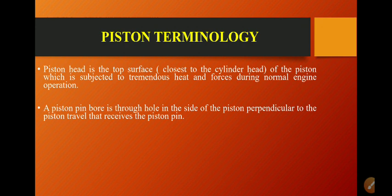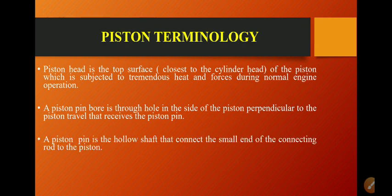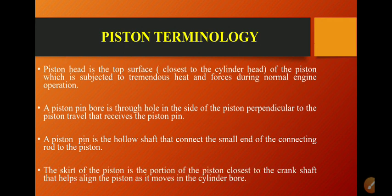The piston pin bore is a through bore in the side of the piston, perpendicular to the piston travel, that receives the piston pin. The piston pin is a hollow shaft used to connect the small end of the connecting rod to the piston. The skirt of the piston is the portion closest to the crankshaft that helps align the piston as it moves in the cylindrical bore.